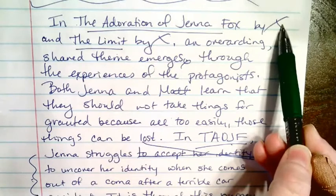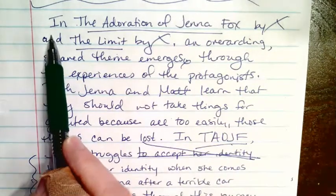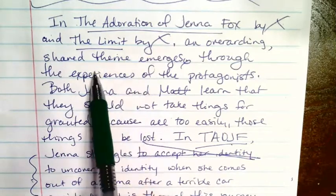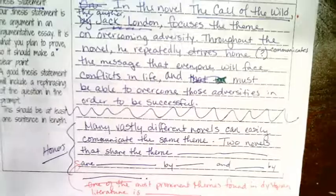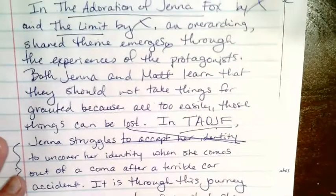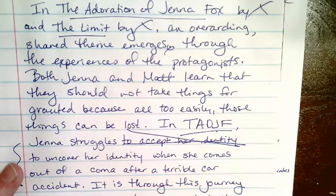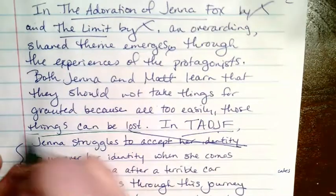I still don't have the authors down — that's something I can add in later since I didn't actually read these books. But here I'm introducing the two books and talking about the theme that emerges. 'In The Adoration of Jenna Fox by [author] and The Limit by [author], an overarching shared theme emerges through the experiences of the protagonists. Both Jenna and Matt learn they should not take things for granted because all too easily those things can be lost.' That in and of itself is the overall theme.